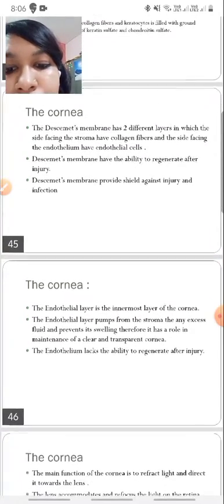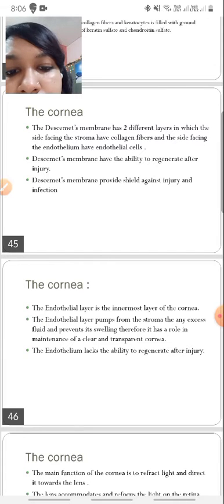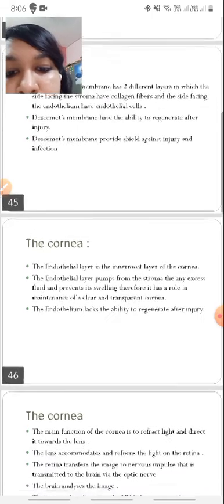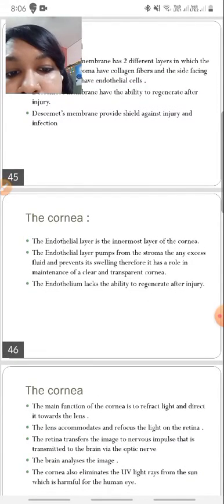They have the ability to regenerate after injury. The most important layer of the cornea is the endothelial cell layer, which is the innermost layer. It is composed of a single layer of hexagonal cells. The number of endothelial cells per cubic millimeter is 3000. If a person loses 75% of these endothelial cells, the cornea doesn't remain transparent.